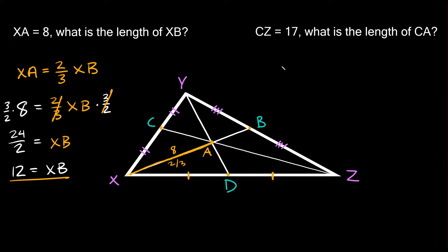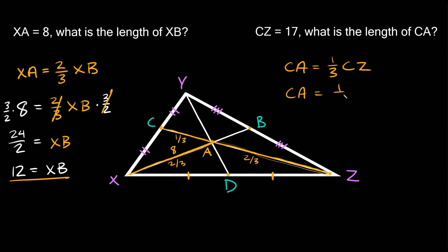The next problem says CZ equals 17 — that's the whole median. We need to find CA, the short distance from the centroid to the midpoint. Since the vertex-to-centroid distance is two-thirds of the total, the centroid-to-midpoint portion must be one-third. So CA = (1/3) × CZ = (1/3) × 17, which is approximately 5.67.